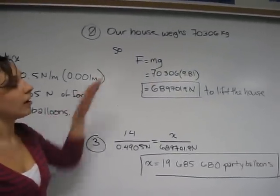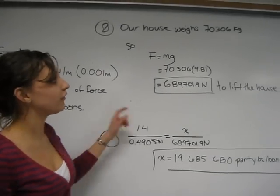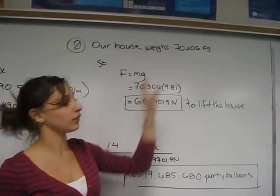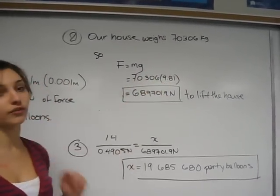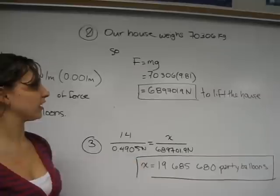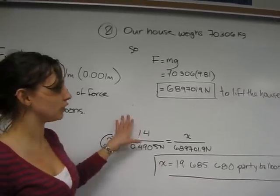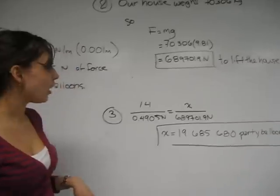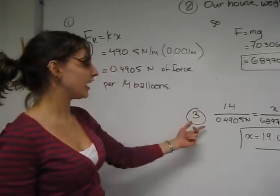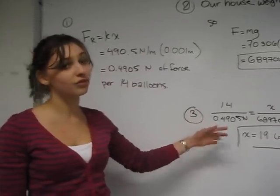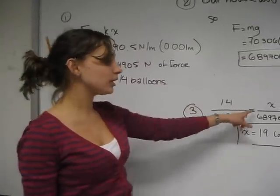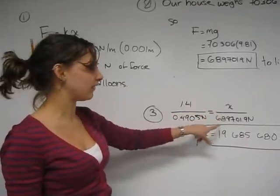Now, using our F equals MG formula, if our house weighs about 70,000 kilograms, times that by the force of gravity, and you get about 689,000 Newtons to lift the house. Now, if 14 balloons exert a force of 0.49 Newtons, so about half a Newton, how many balloons will be required to lift the entire house?